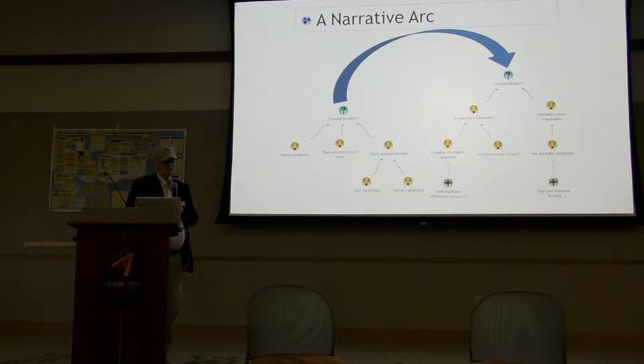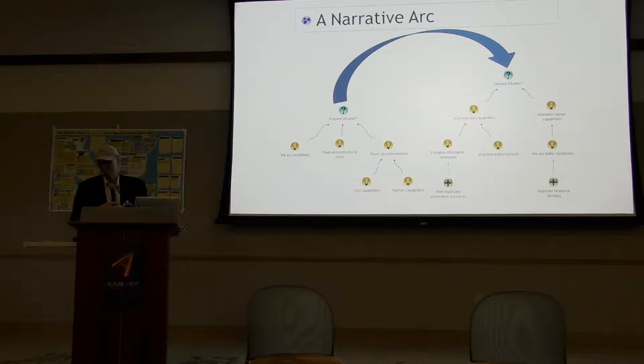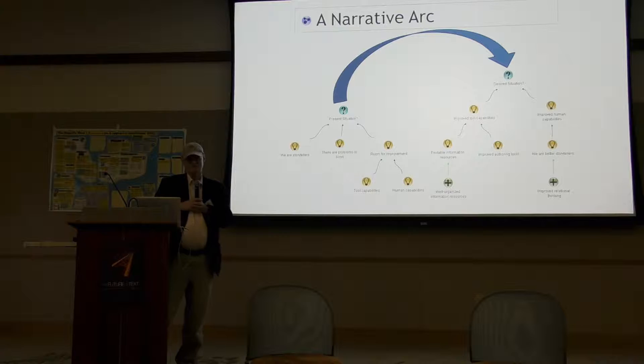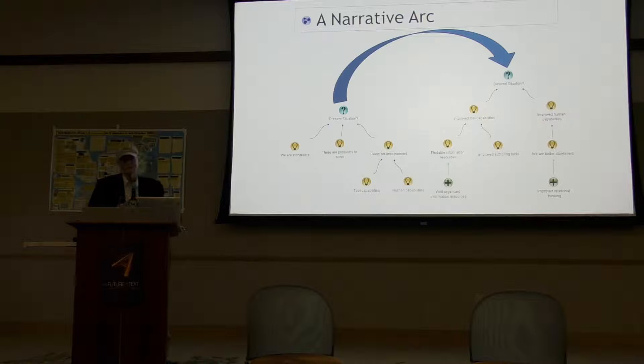What I have here is a narrative arc that is my interpretation of the Engelbart story. It begins on the left side — the present situation — acknowledging that we are storytellers and that we have problems to solve. They may be wicked, they may be tame. The wicked ones are the ones we should care about. There is room for improvement in our tool capabilities and our human capabilities. The Engelbart story is that you need to co-evolve the tools and the human capabilities together. There's this narrative arc to a desired situation where we have improved tool capabilities and improved human capabilities.